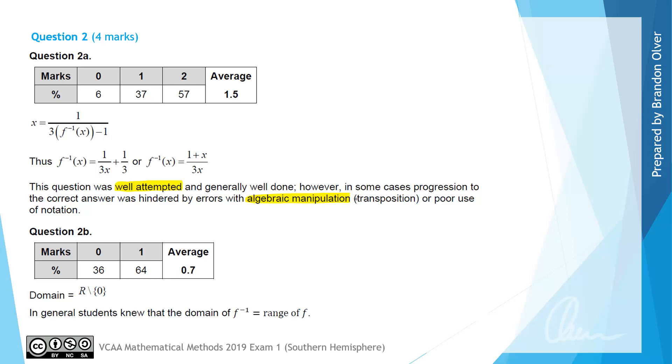In particular, transposing an equation to get y equals and poor use of notation stopped students from getting full marks. The key takeaway is that it needed to be f inverse of x equaling the rule as the final answer rather than just y equals.